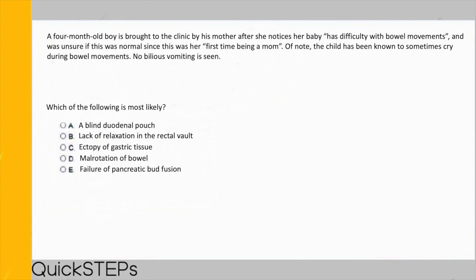For choice D, malrotation of the bowel can result in a volvulus, which is a lethal emergency characterized by frank blood in the stool, pain, and bilious vomiting. The absence of bilious vomiting makes this less likely than Meckel's. For choice E, failure of pancreatic bud fusion results in pancreatic divisum, which can cause abdominal pain from pancreatitis later in life — but the symptoms here are not consistent with pancreatitis. So the most probable answer is intussusception secondary to Meckel's diverticulum, which is answer choice C.